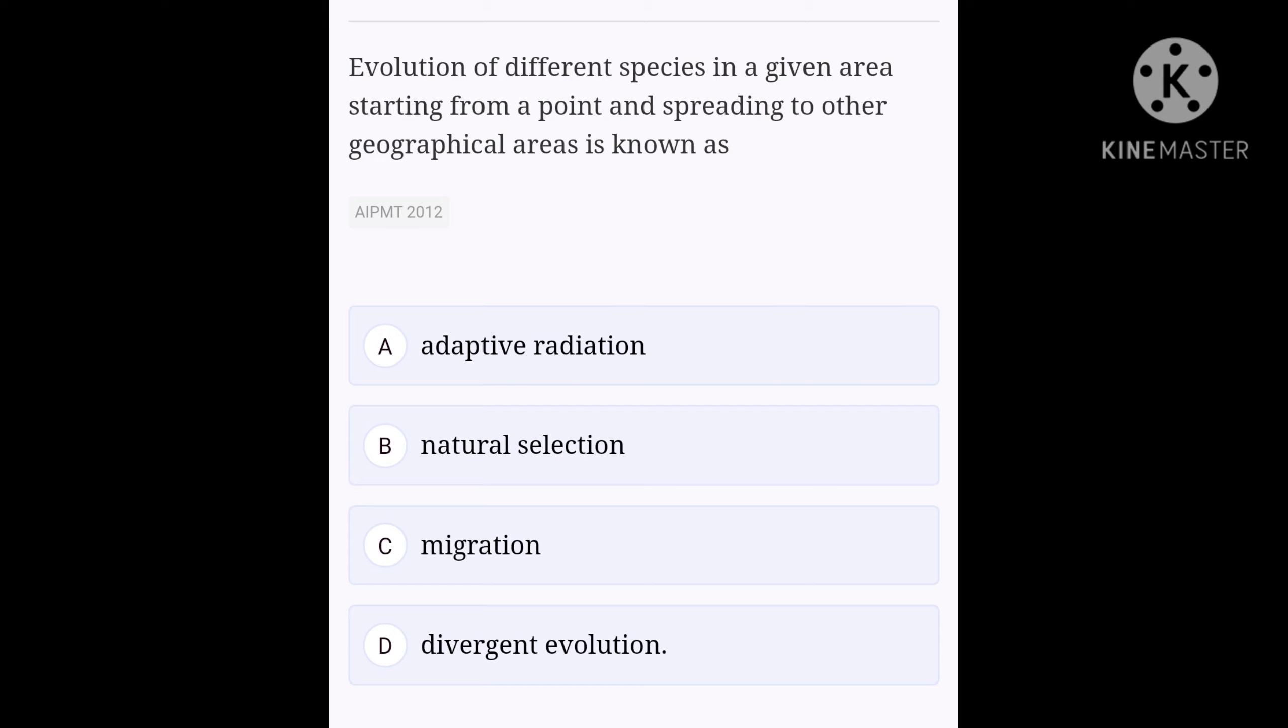Adaptive radiation is the evolution of species of animals or plants into a number of different forms. As the original population increases in size, it spreads out from its center of origin to exploit new habitats and food sources. In time, this results in a number of populations each adapted to its particular habitat. Eventually these populations will differ from each other sufficiently to become new species. And at last, the right answer for this question is A, adaptive radiation.